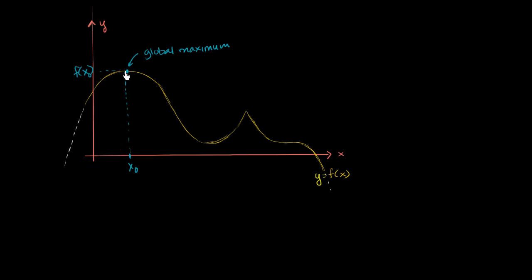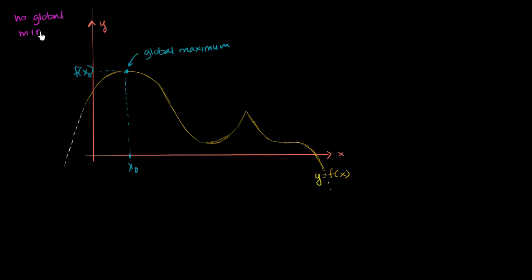That's pretty obvious when you look at it like this. Now, do we have a global minimum point the way that I've drawn it? Well, no. This function can take on arbitrarily negative values. It approaches negative infinity as x approaches negative infinity, and it approaches negative infinity as x approaches positive infinity. So we have no global minimum.